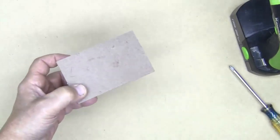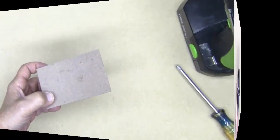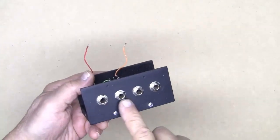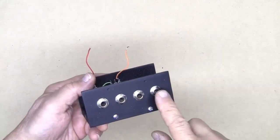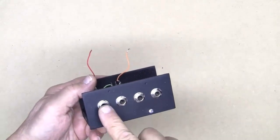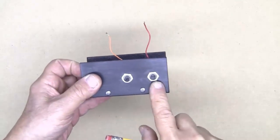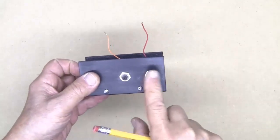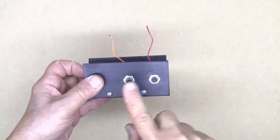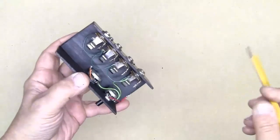I've mounted the four phono jacks—input one, two, three, and the output—and I've mounted the two 10K potentiometers. These will be the volume controls for inputs one, two, and three.